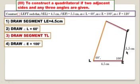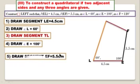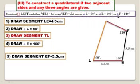Draw the segment EF of length 5.5 centimeters. Take the measure of angle F equal to 120 degrees, because the measure of angle F equal to 120 degrees is given. Mark this angle using the protractor.